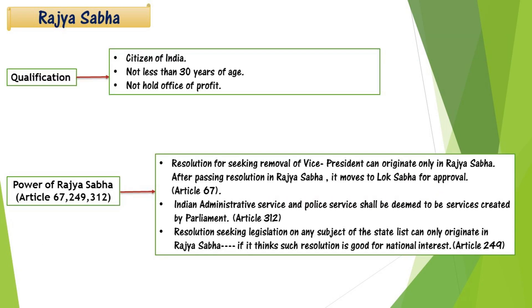The qualifications for Rajya Sabha are: one must be a citizen of India, must not be less than 30 years of age, and must not hold any office of profit. Now the powers of Rajya Sabha — Article 67 states that for removing the Vice President, a resolution is passed in Rajya Sabha.